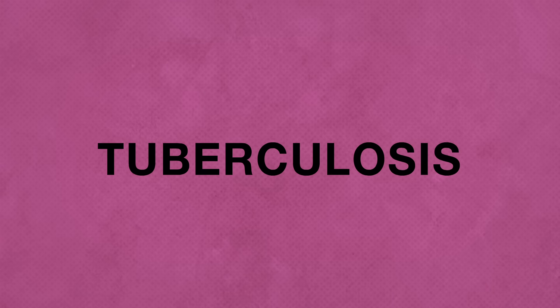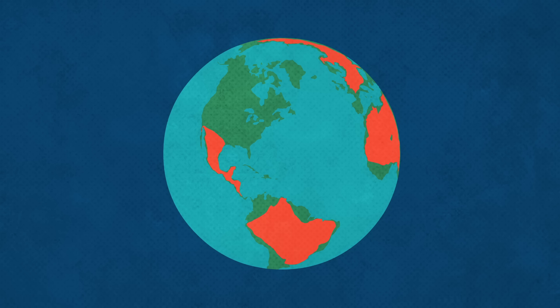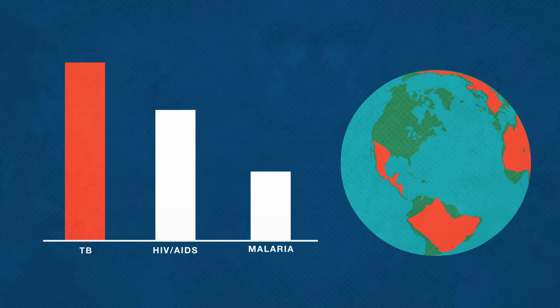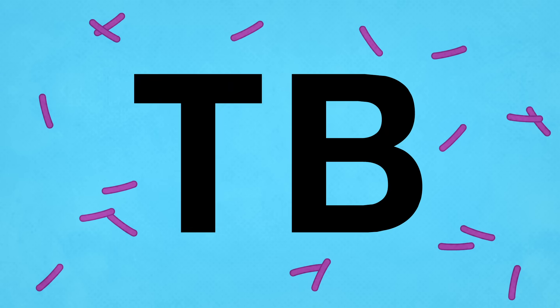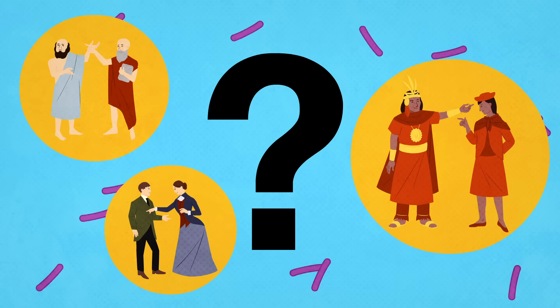Today, tuberculosis, or TB, is still one of the world's biggest infectious killers, causing more deaths than malaria, or even HIV and AIDS. But what exactly is this disease, and how has this pathogen persisted for so long?